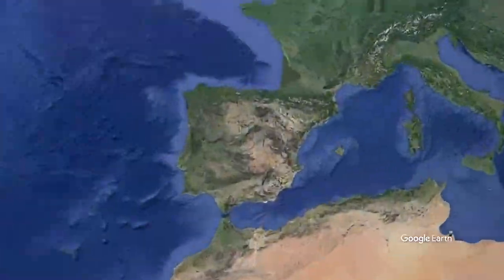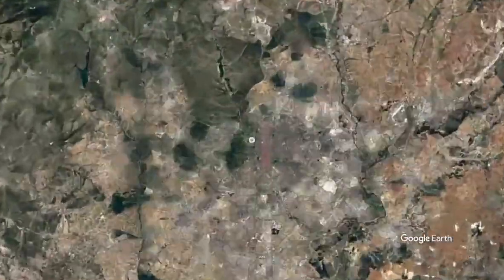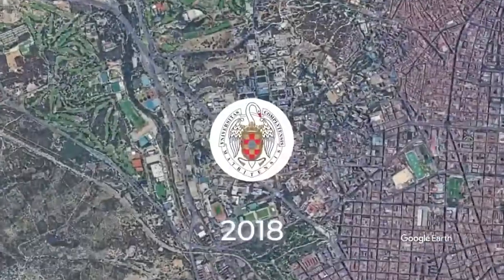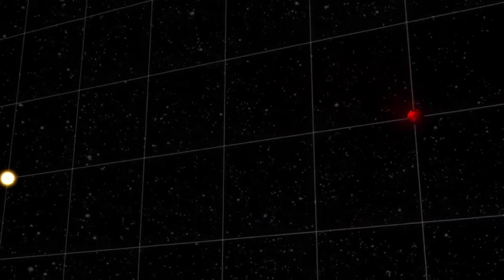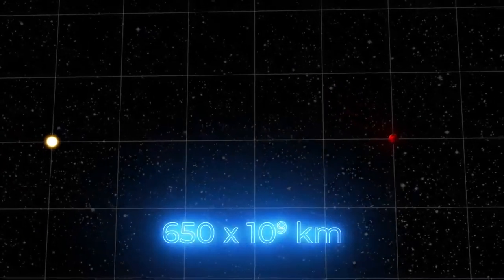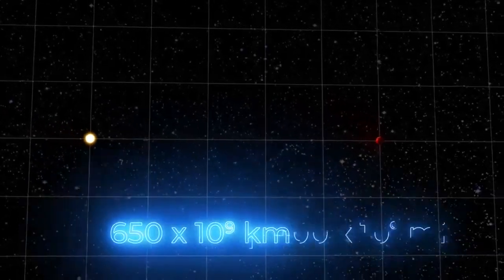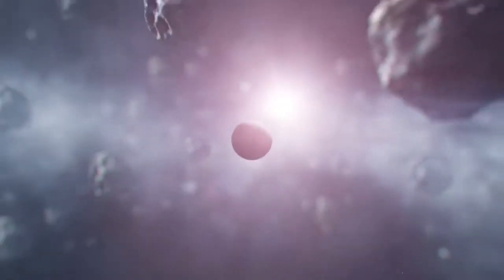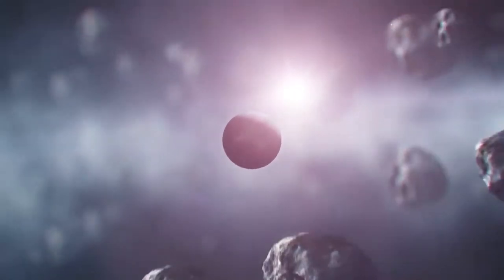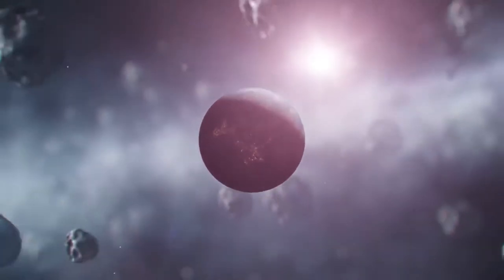Astronomers from the Complutense University of Madrid published a report in 2018 which states that the minimum distance between Gliese 710 and the Sun is a mere 650 billion kilometers or 400 billion miles. In this case, a star flying near us could take comets with it and move them closer to the Sun, which puts our planet in great danger.